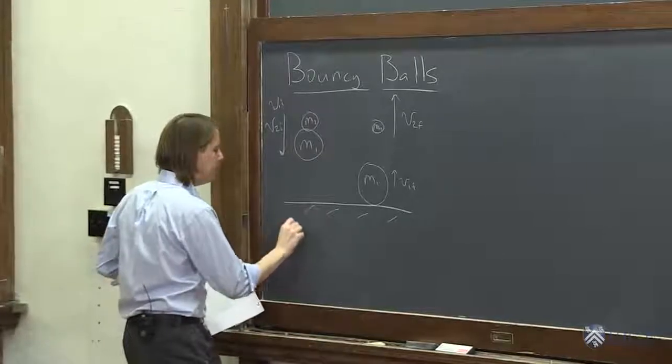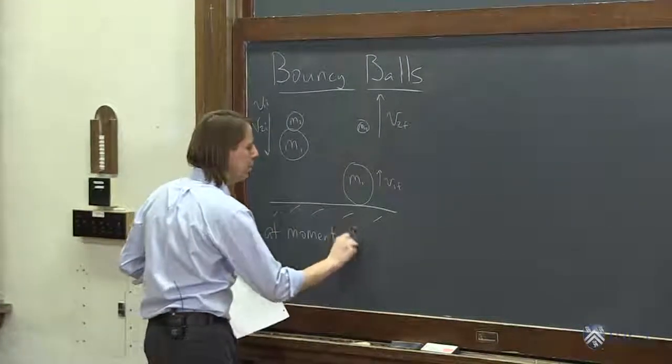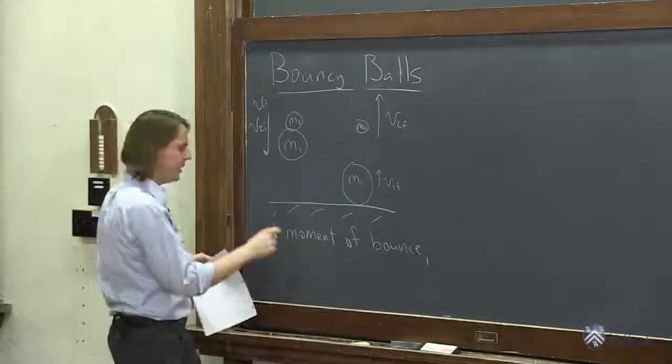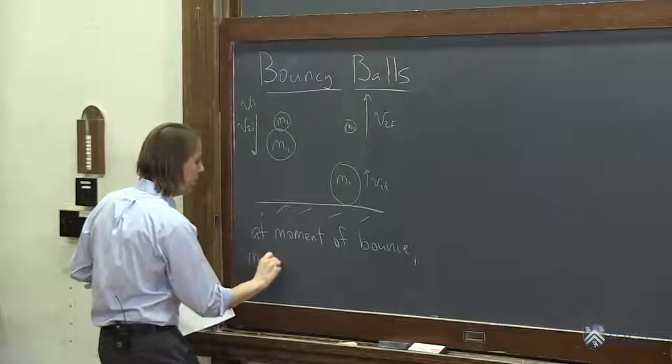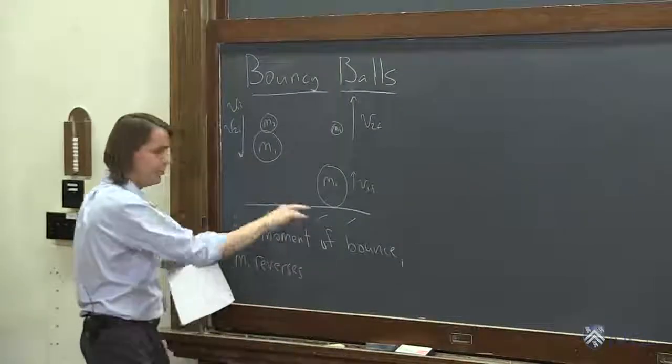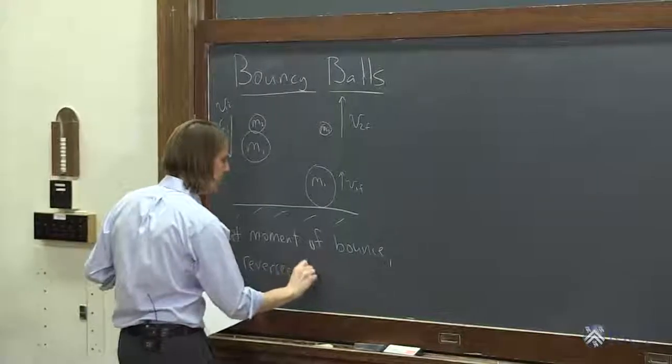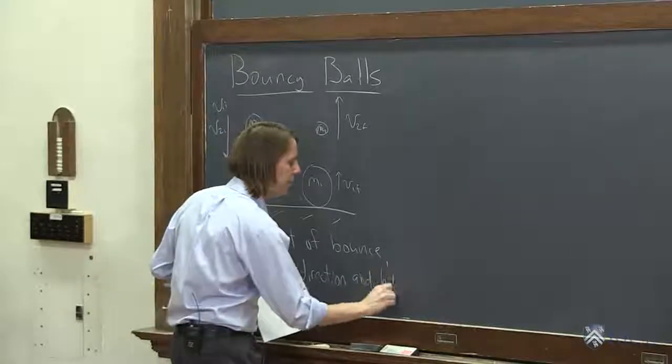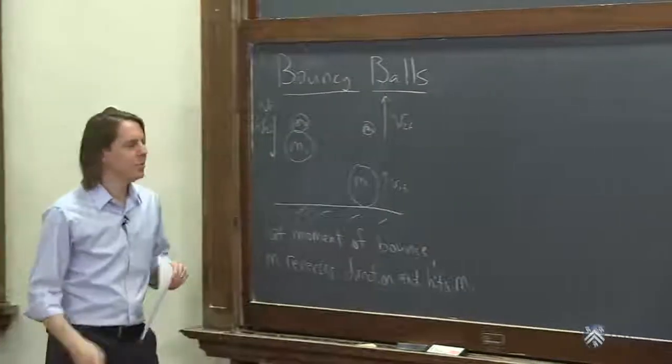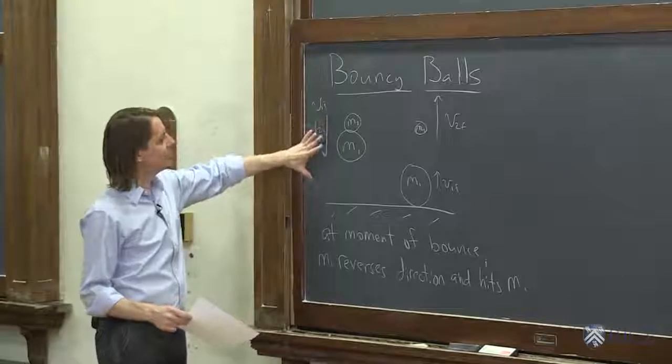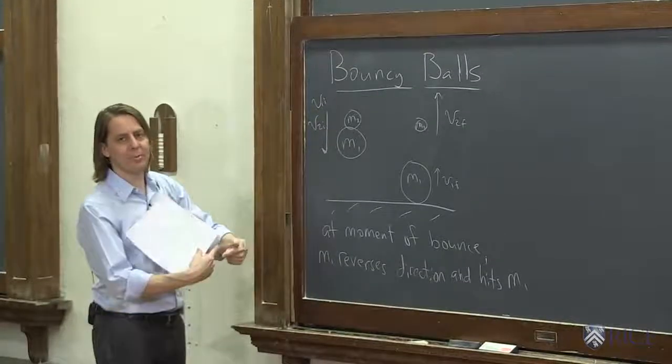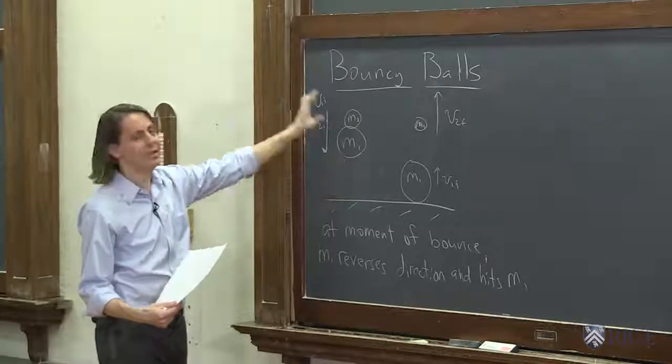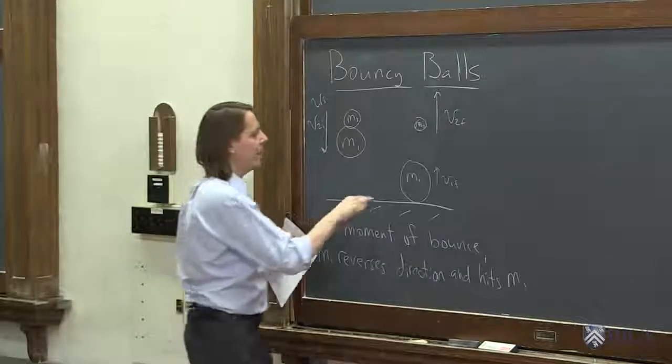The condition is at the moment of the bounce, M1 reverses direction because it elastically collides with the floor, reverses direction, and hits M2. So we think of it as an elastic collision where they have the same speed but they're going in opposite directions. You can imagine maybe there's a slight gap and M1 hits the table first and then hits M2.